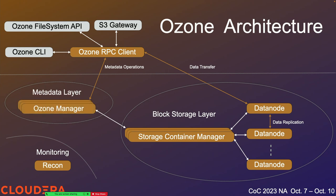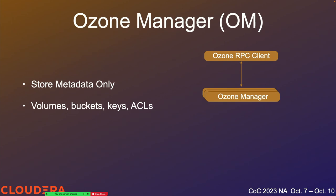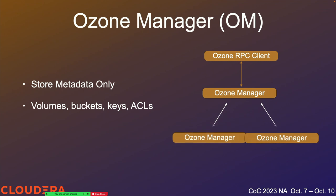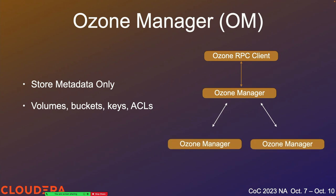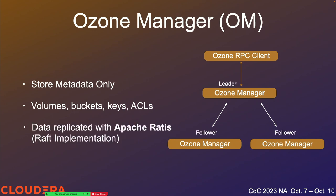The Ozone Manager only stores metadata. The Ozone RPC client talks to the Ozone Manager for metadata operations. If it's just doing something like a bucket create, the operation may only involve the Ozone Manager. If it needs to read or write data, it uses the metadata from the Ozone Manager to go to the data nodes. In a high availability setup there are actually three Ozone Managers. Data is replicated across all three using Apache Ratis — a Raft implementation where a leader and followers must commit operations to a majority, meaning two of the three nodes.